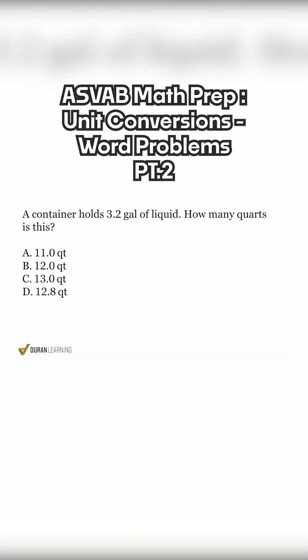Let's begin with the question sentence, and that question sentence, as always, is the first priority. So how many quarts is this? So another straightforward unit conversion problem where they say, hey, here's this container's capacity, 3.2 gallons of liquid.